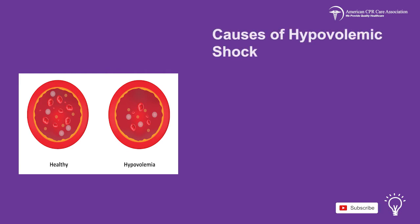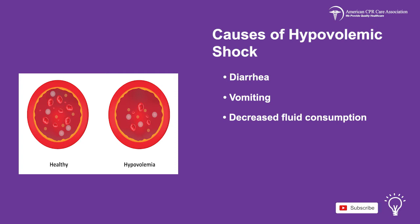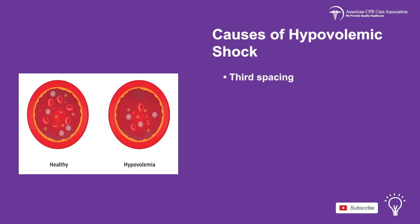Hypovolemic shock can be caused by diarrhea, vomiting, decreased fluid consumption, osmotic diuresis, fluid accumulating in extracellular space known as third spacing, burns, or hemorrhages.